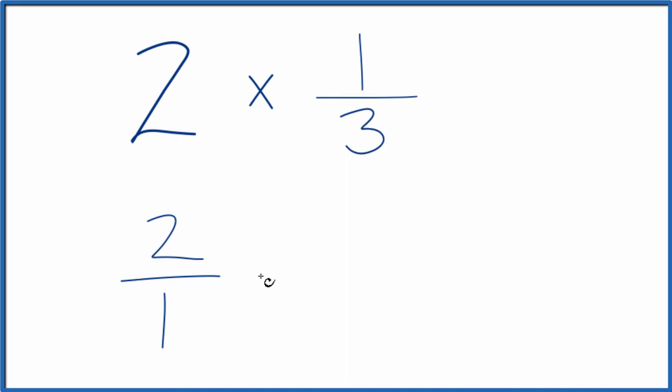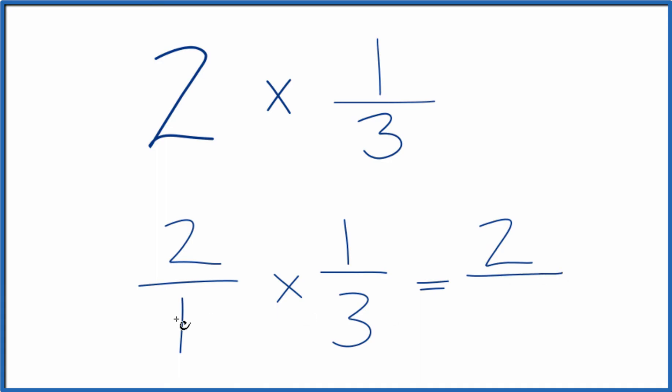So now two over one times our one-third. When we multiply fractions, we multiply the numerators and then the denominators. Two times one, that's two. And one times three is three, two-thirds, just like we got before.